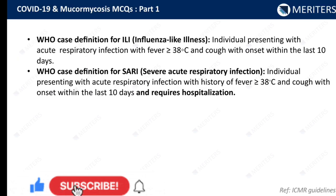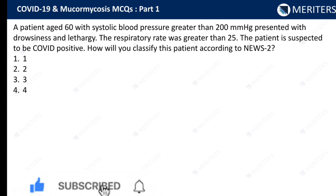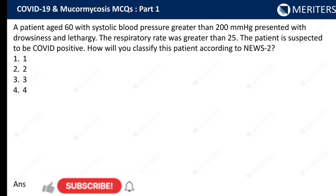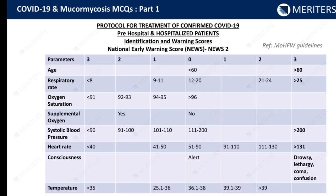A patient aged 60 with systolic blood pressure greater than 200 mmHg presented with drowsiness and lethargy; the respiratory rate was greater than 25. The patient is suspected to be COVID-positive. How will you classify this patient according to NEWS2? NEWS2 is a protocol for treatment of confirmed COVID-19 pre-hospitalized and hospitalized patients — identification and warning score. NEWS stands for National Early Warning Score. The whole table of parameters and values is important; please note it down and memorize it.